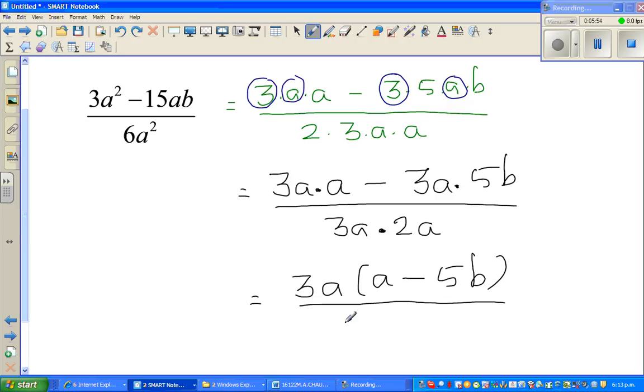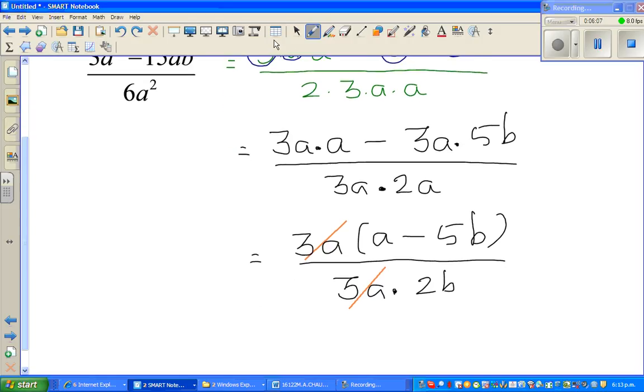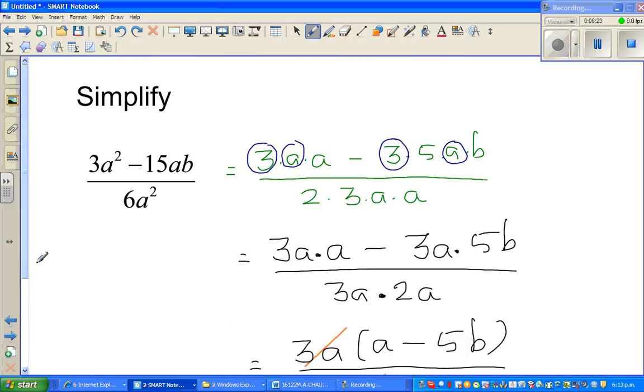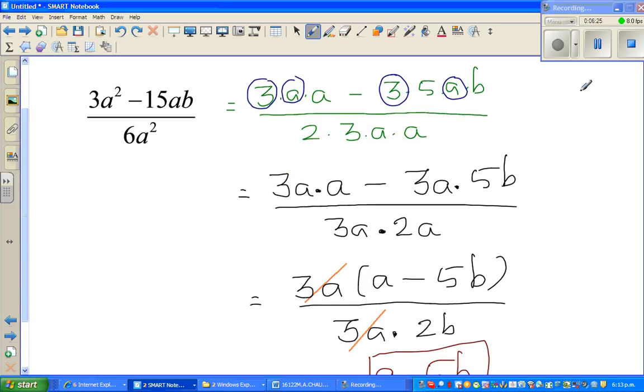Now you can cancel the 3a. If you cancel like this, what will remain is your answer, which is whatever is remaining, which is a minus 5b over 2a is the final answer. And you should be pretty happy if you're getting all these answers right. See you in the next video.